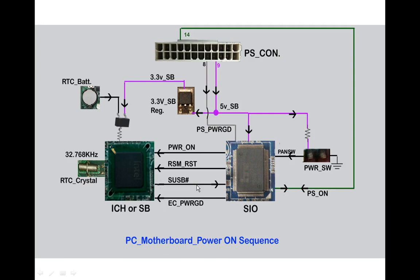The south bridge, on receiving these two signals and functioning well, releases another signal called SOSB, also called SLPS3 — this is also a 3.3V signal. On receiving the SOSB signal, the SiO chip makes the PS_ON voltage go to zero. Before receiving this signal the voltage at the green wire is 5 volts; after receiving it, it becomes zero. When pin 14 (green wire) goes to zero, the SMPS comes on and releases 12V, 5V, 3.3V, and minus 12V.